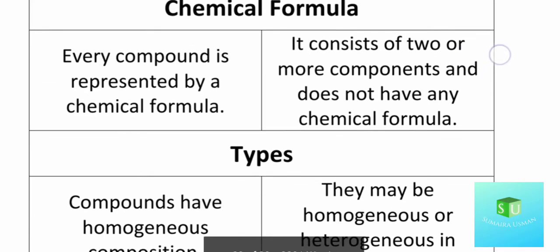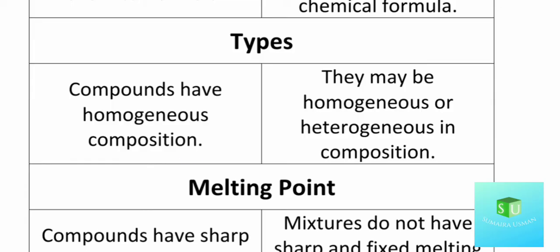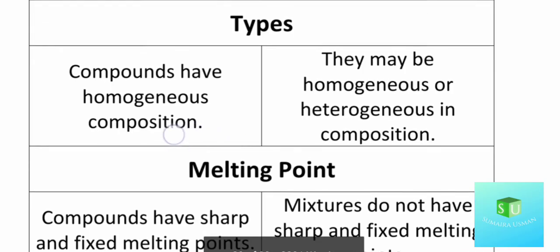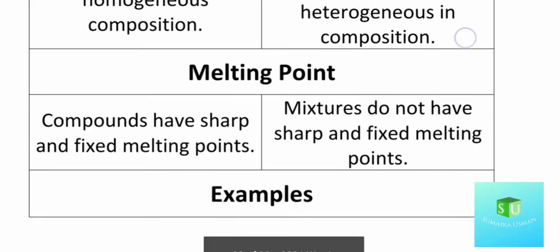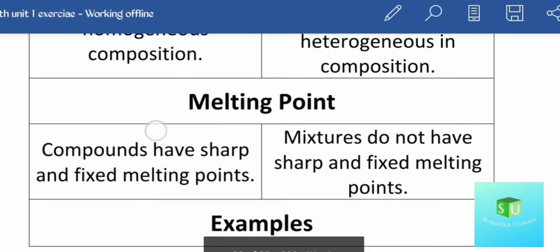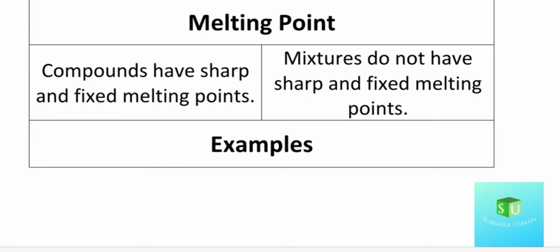The next point is types: compounds have a homogeneous composition — their composition is always uniform — whereas a mixture can be either homogeneous or heterogeneous. The next point is melting point: a compound has a sharp and fixed melting point, whereas a mixture does not have a fixed melting point — it can melt over a range of temperatures.